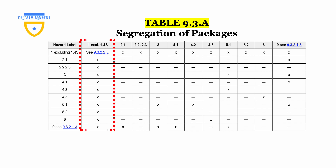In the second column, we see '1 excluding 1.4s' — if you can see where the cursor is. And then down, we see x, x, x throughout to the bottom.